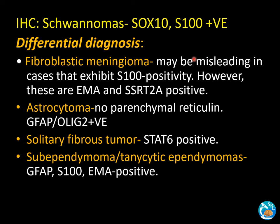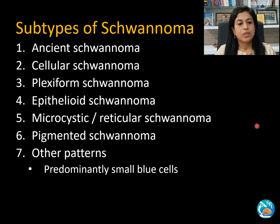Second differential is astrocytoma — these do not have pericellular reticulin and are GFAP and Olig2 positive. Solitary fibrous tumour is STAT6 positive. Subependymoma or tanycytic ependymomas express GFAP, S100, and EMA positivity.